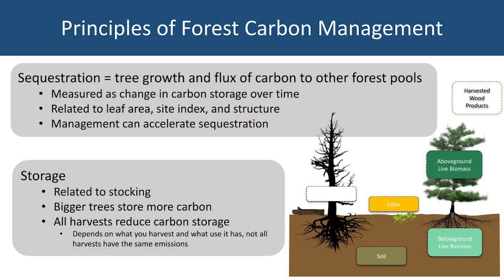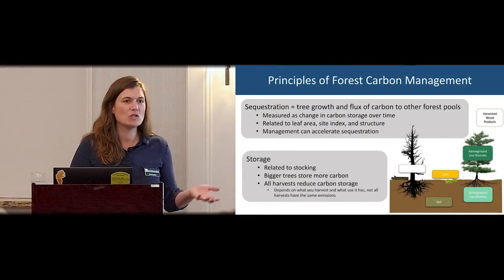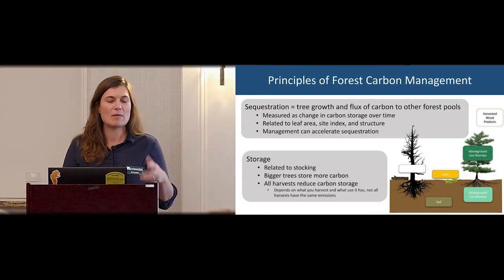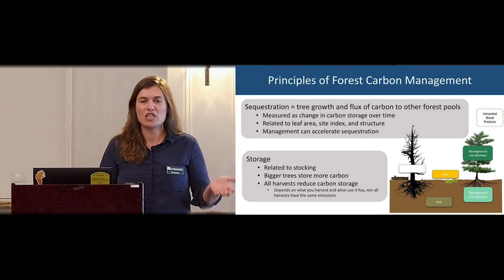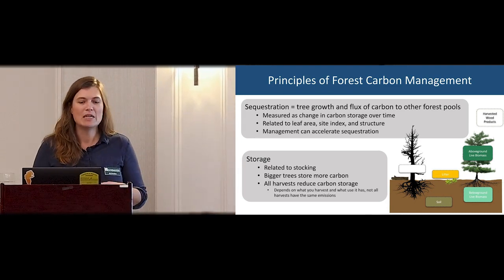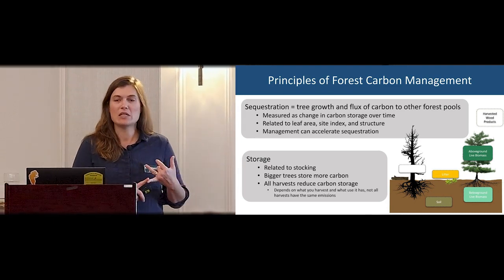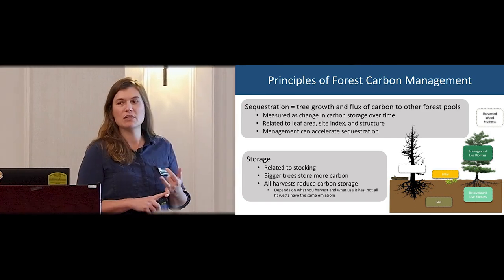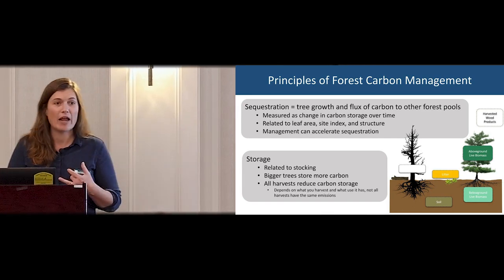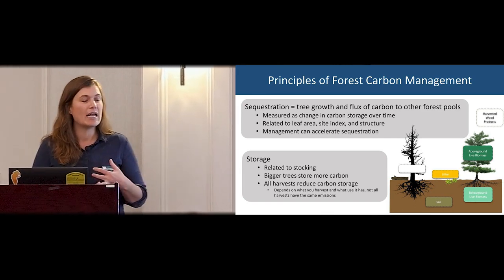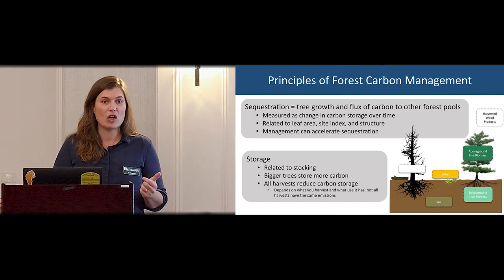We have sequestration — tree growth, as Bill illustrated, and flux of carbon from live trees into the other pools. That's something we can accelerate, and it's measured as the change in carbon storage over time. It's related to a couple of different conditions and properties in our forest, like leaf area, site index, and structure.